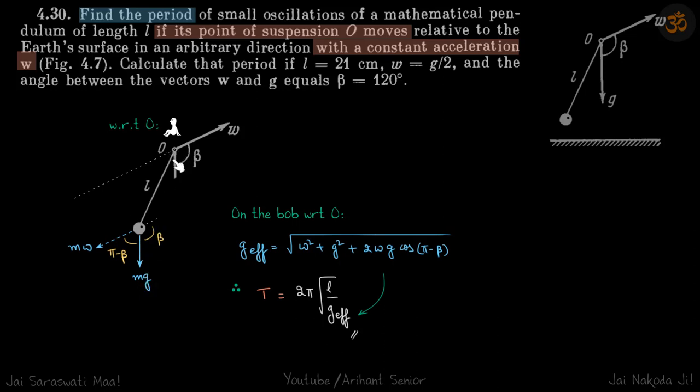The angle made between W and gravity is beta, so here also this angle is beta. The angle between MG and MW is π minus beta.